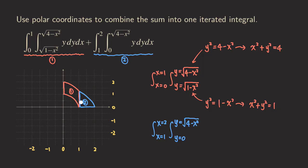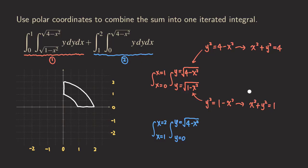What kind of region are we getting when we combine both regions together? If we combine the two regions, we get this combined region where the outer curve is the arc of the circle of radius two and the inner curve is the arc of the circle of radius one. That is the region of integration.